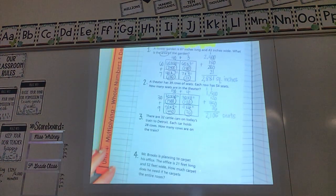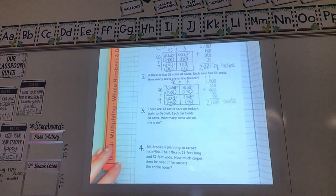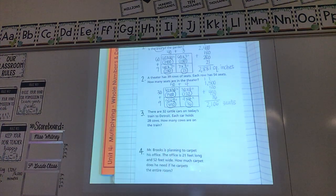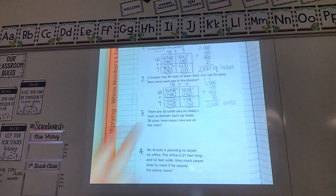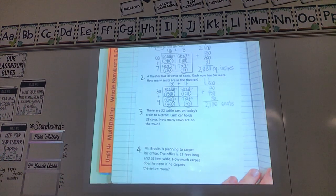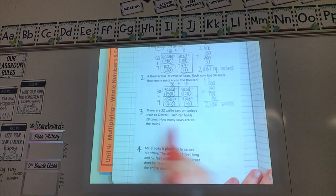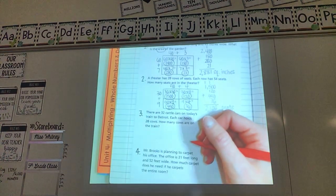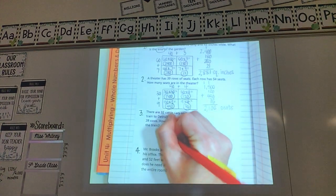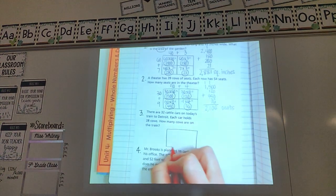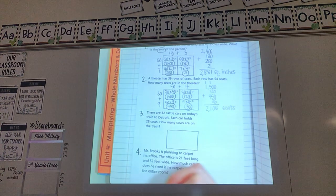All righty. There's actually two more in our notes. Let's just do one more. I think that will be enough for you. If you're still having trouble after we do this third one together, remember you can go back and watch the video and really look at each part and then I bet you'll get the hang of it. So number three, last one we'll do together for the video lesson today. There are 32 cattle cars on today's train to Detroit. Each car holds 28 cows. How many cows are on the train? All right. I know I have to use the box today because we're doing place value sections method.